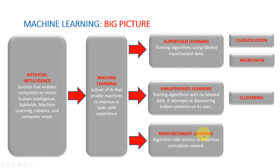Reinforcement learning is a very powerful way of learning where algorithms take actions to maximize cumulative reward. I'll give you a detailed example right now. So these are the three categories: supervised, unsupervised, and reinforcement learning. Let's dig a little bit deeper into each of them.